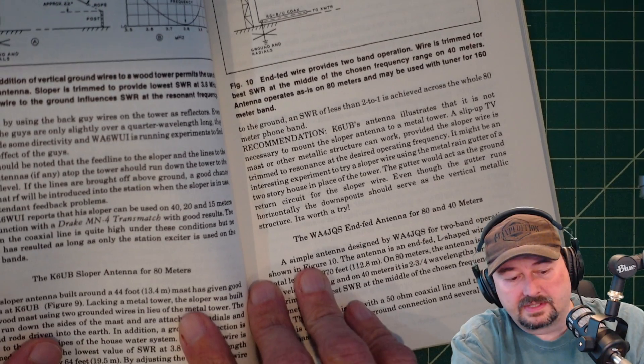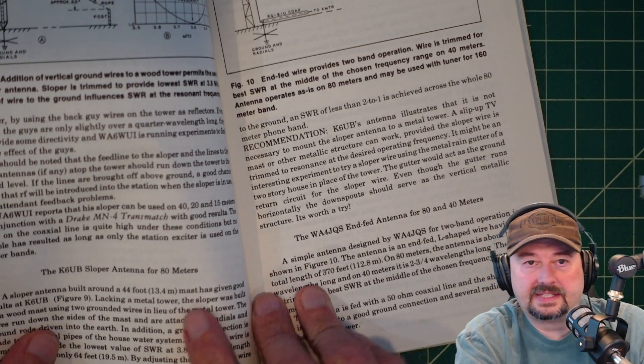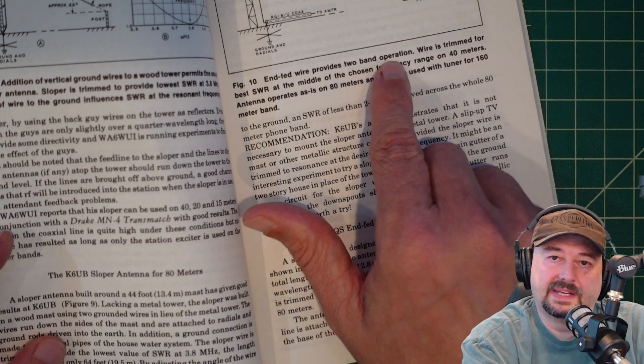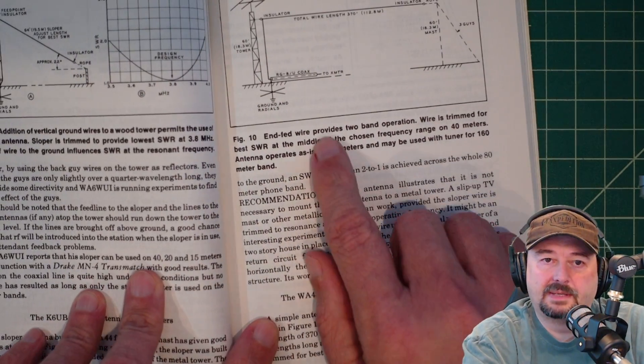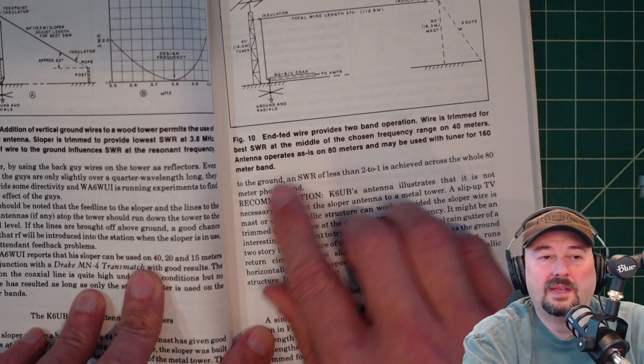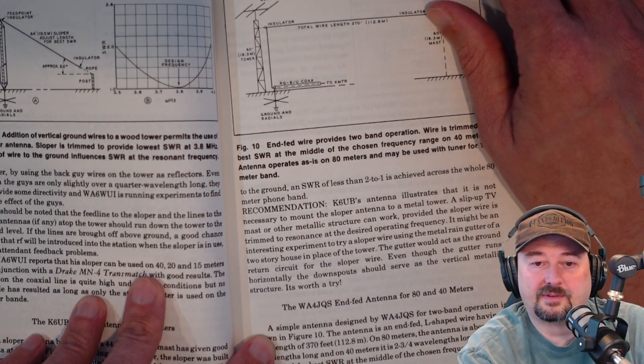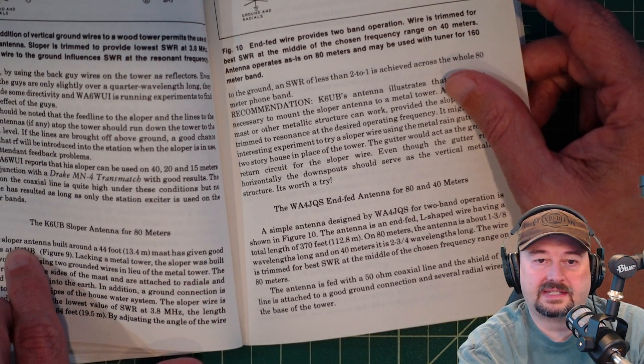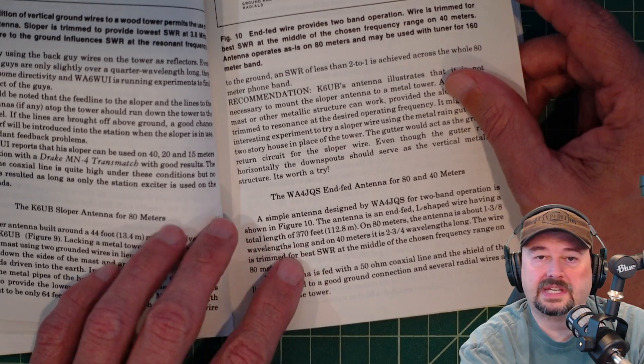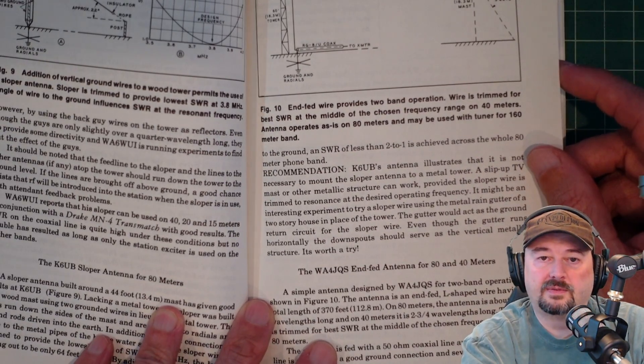You can, but I like more of the NFED type antennas, and I believe that is right here. So, here's where he talks about NFED antennas. Here we go. NFED wire provides two-band operation wires trimmed for SWR. This is not the same type of NFEDs that we use, but this is still good information. He talks about different antenna designs. So, here's the K6UB and then the WA4JQS. So, it's a pretty good read.